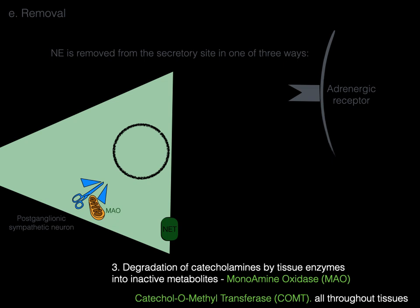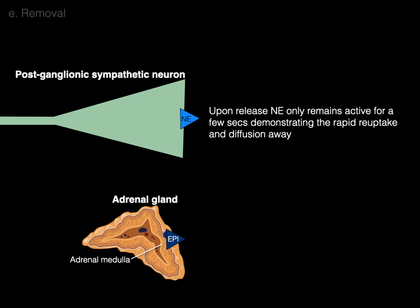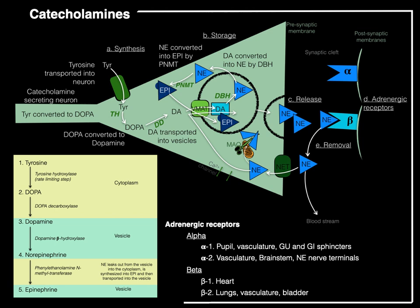A little review: postganglionic sympathetic neurons release norepinephrine, and upon release, norepinephrine only remains active for a few seconds, demonstrating how quickly reuptake and diffusion can occur. In contrast, epinephrine from the adrenal gland's chromaffin cells remains active for one to several minutes until it diffuses into distant tissues and is degraded by COMT. And that, my friends, is an overview of catecholamines in a nutshell.